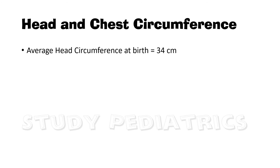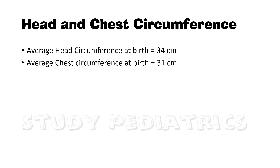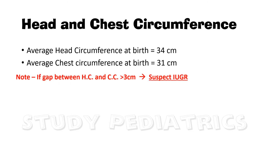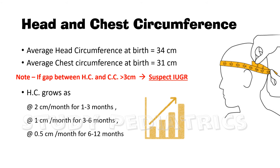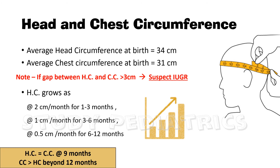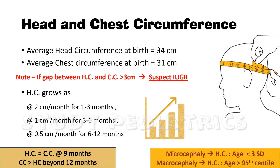Now coming to another important parameter — head and chest circumference. Average head circumference at birth is 34 cm and average chest circumference at birth is 31 cm. Note: if the gap between HC and CC is more than 3 cm, suspect IUGR. Rate of head circumference growth after birth is 2 cm per month for the first 3 months, 1 cm per month for the next 3–6 months, and 0.5 cm per month from 6 to 12 months. Head circumference becomes equal to chest circumference at 9 months, and chest circumference grows more than head circumference beyond 12 months of age.